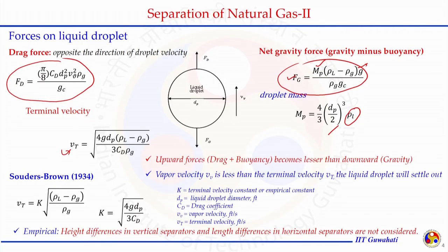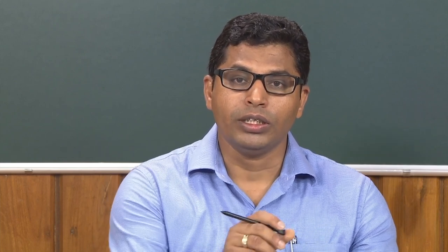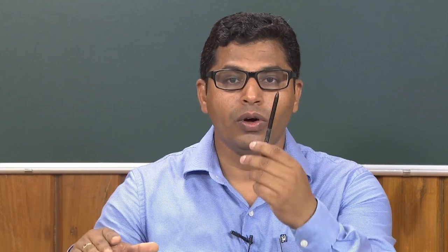Souder and Brown gave an empirical formula relating terminal velocity to the densities of both phases using an empirical coefficient K, called the terminal velocity constant. Comparing with the force balance, K can be represented in terms of droplet size and drag force coefficient. It is still empirical because it does not account for the height in a vertical separator or the length in a horizontal separator. In a horizontal separator, the drag force is in the direction of flow while gravity is perpendicular to it, so the force balance — and K value — will be different.